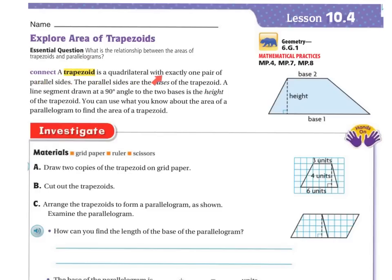A trapezoid is a quadrilateral with exactly one pair of parallel sides. The parallel sides are the bases of the trapezoid — base 1 and base 2. These are my parallel lines, so that's considered base 1 and base 2. A line segment drawn at a 90 degree angle to the two bases is the height. There's my 90 degree angle, and there's that line.